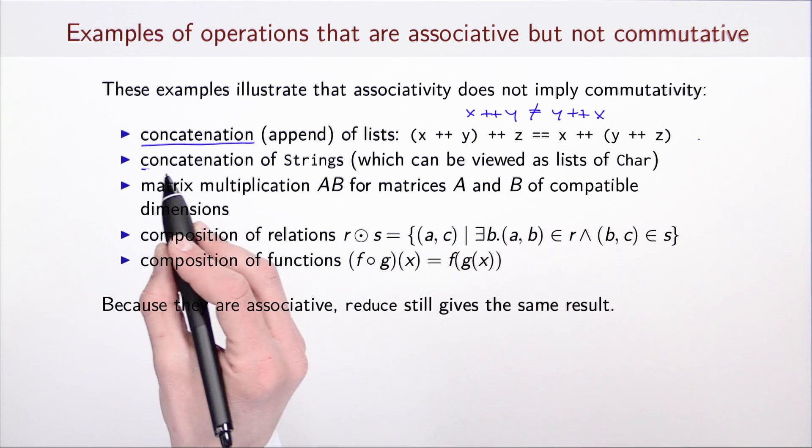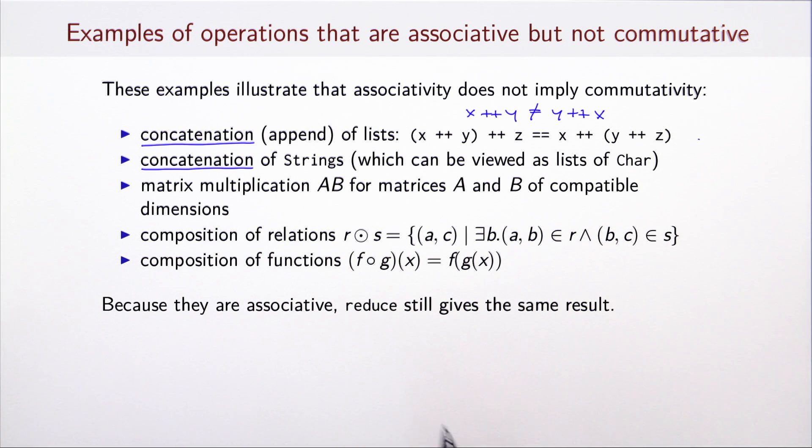A closely related example is concatenation of strings, which can in fact be viewed to some extent as lists of characters. Matrix multiplication is another example of operation that is associative but it is not commutative, even when we could both compute A times B and B times A. In general, of course, it need not be the case that B times A is even well-defined when A times B is well-defined. Analogous situation arises with composition of relations and composition of functions.